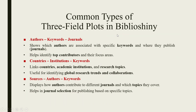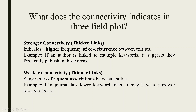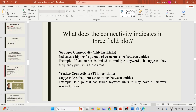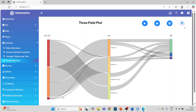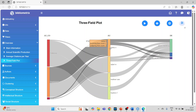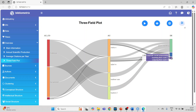How to interpret the three-field plot: stronger connectivity, indicated by thicker lines, shows a high frequency of co-occurrence between entities. For example, if an author is linked to multiple keywords, they frequently publish in those areas. Weaker connectivity, shown by thinner lines, indicates less frequent associations — a journal with fewer keyword links may have a narrower research focus. In this dataset, Malaysia has two significant authors; Bangladesh has three significant authors. Bukhari's major work is in green banking; Nisha addresses green banking as well as sustainability and corporate social responsibility.